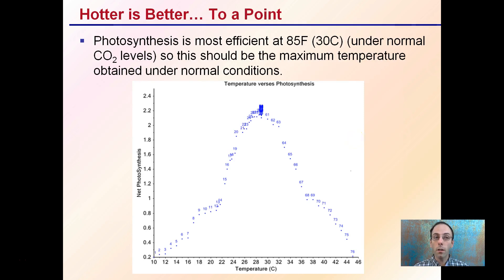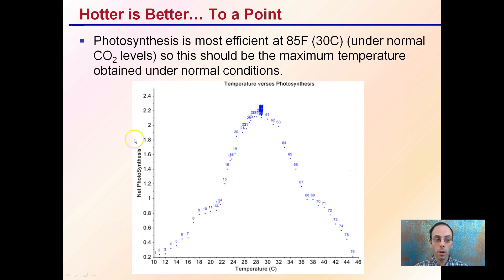So hotter is better to a point, and I stress this because photosynthesis is most efficient at about 85 degrees Fahrenheit, which is about 30 degrees Celsius under normal carbon dioxide levels. So this should be the maximum temperature obtained under normal growing conditions.